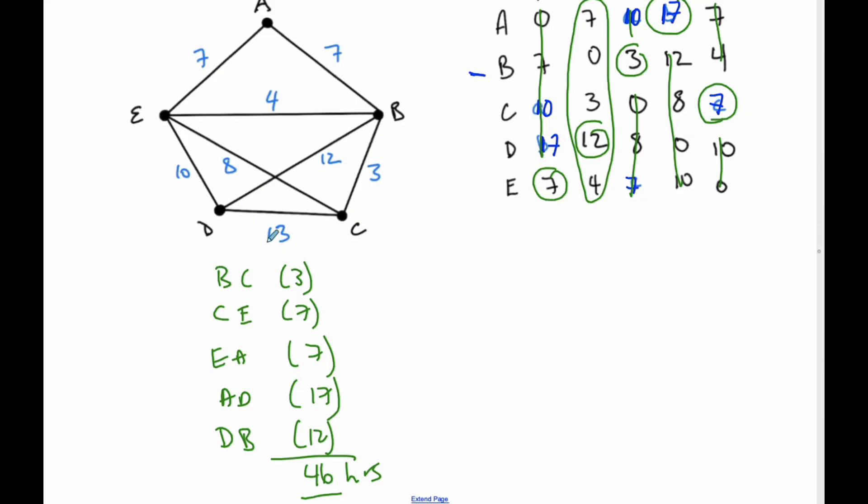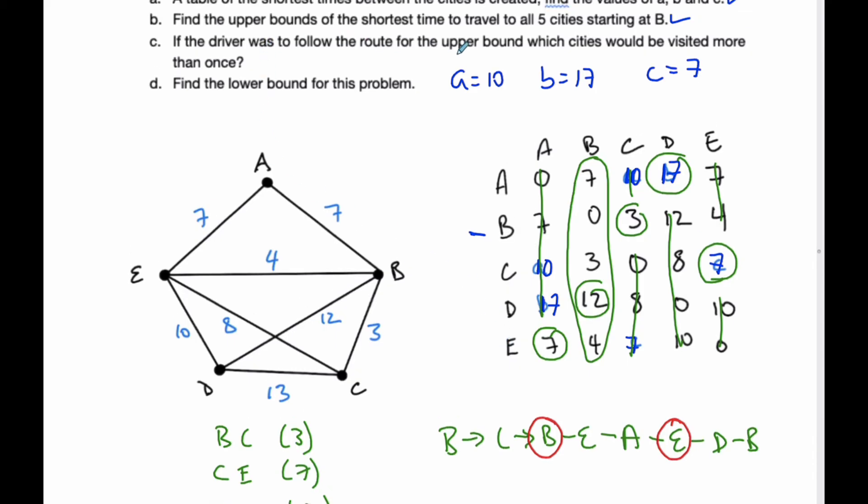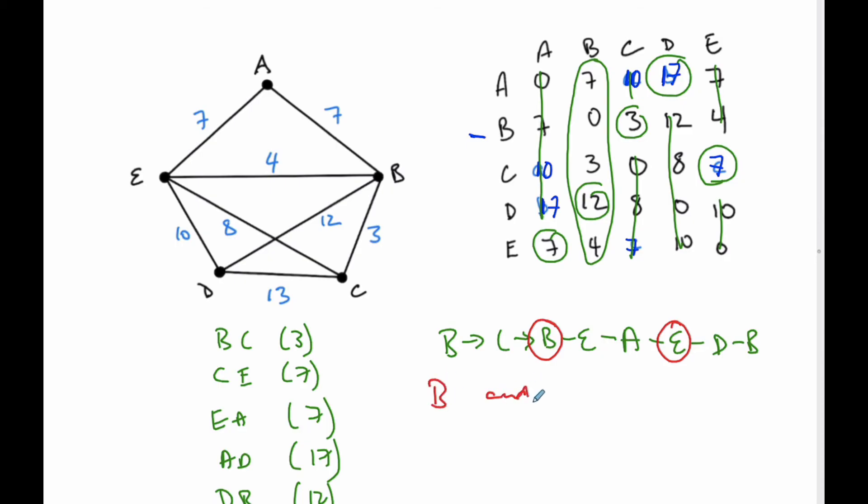If the driver was to follow the route for the upper bound, which cities would be visited more than once? When I'm at B, I go to C. From C, I go to E, but the shortest distance was going through B. So it's really B to E. From E, I go directly to A. From A to D, I had to go through E first. Then finally from D directly to B. So I went through B twice and E twice.